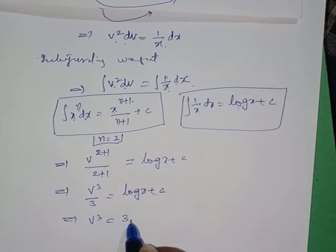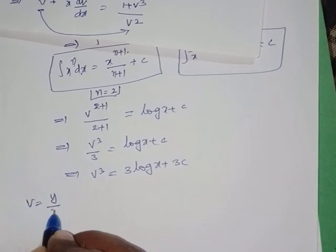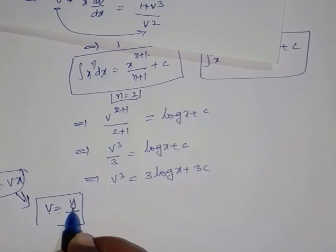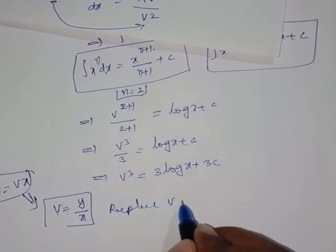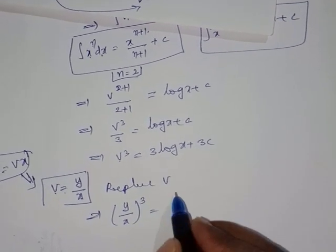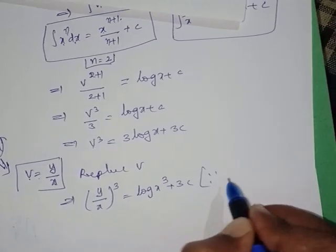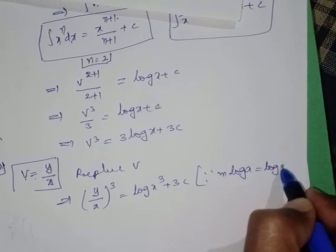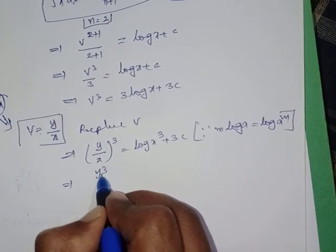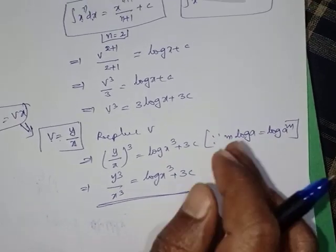Transferring: v³ = 3·log x + 3C. Since v = y/x, replace v with y/x: (y/x)³ = 3·log x + 3C. Using m·log a = log(aᵐ), we get 3·log x = log(x³). Therefore: y³/x³ = log(x³) + 3C is the required solution.